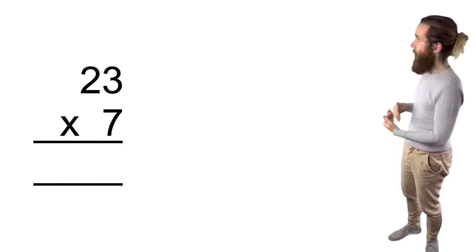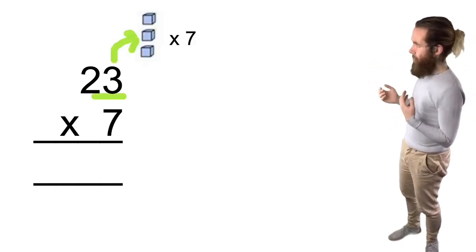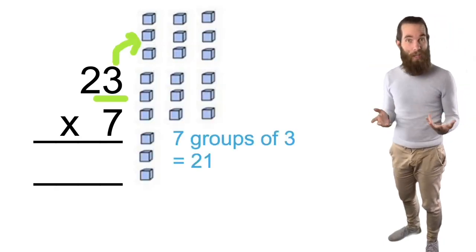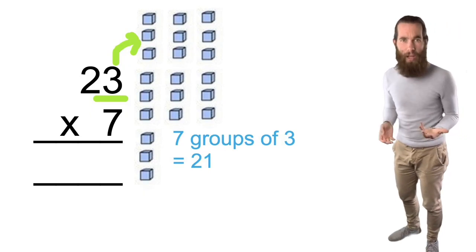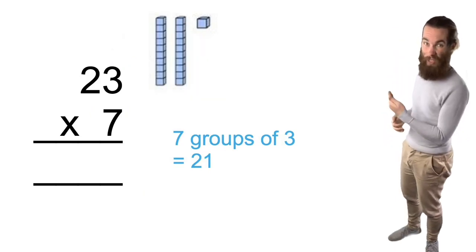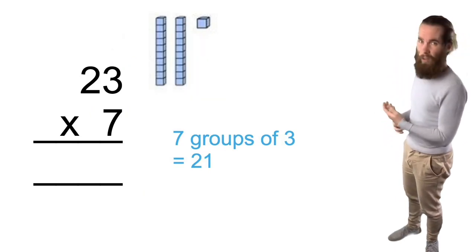So I'm going 7 times whatever's on top, so 7 times 3. 7 times 3 is 21, and so I've got 21 units here which I could actually write in a different way. I could write that as two tens and one unit.